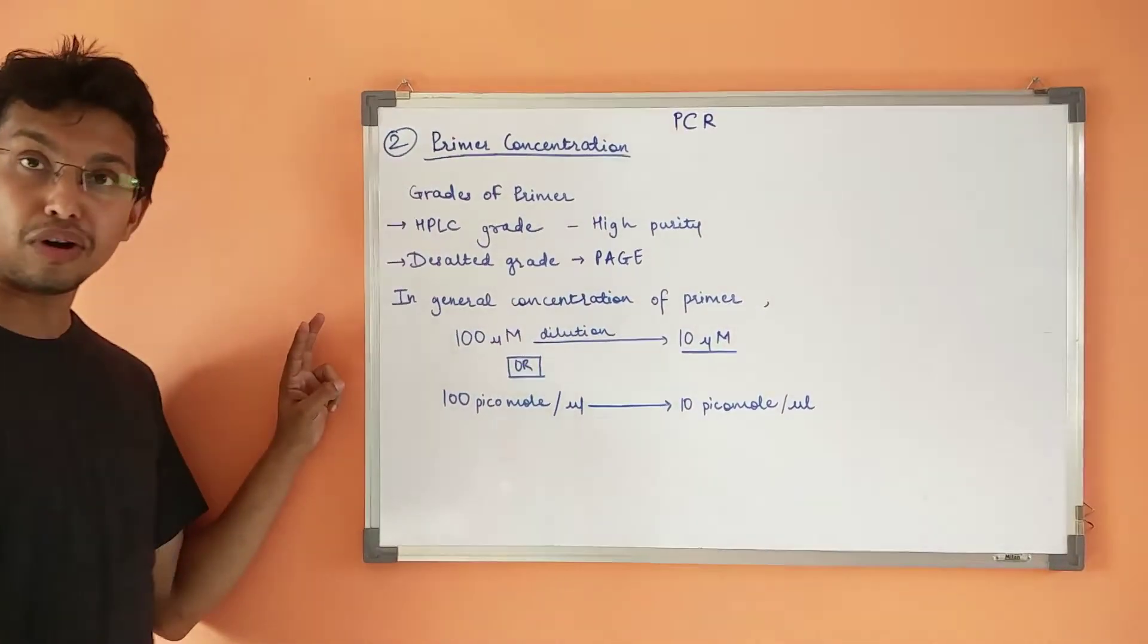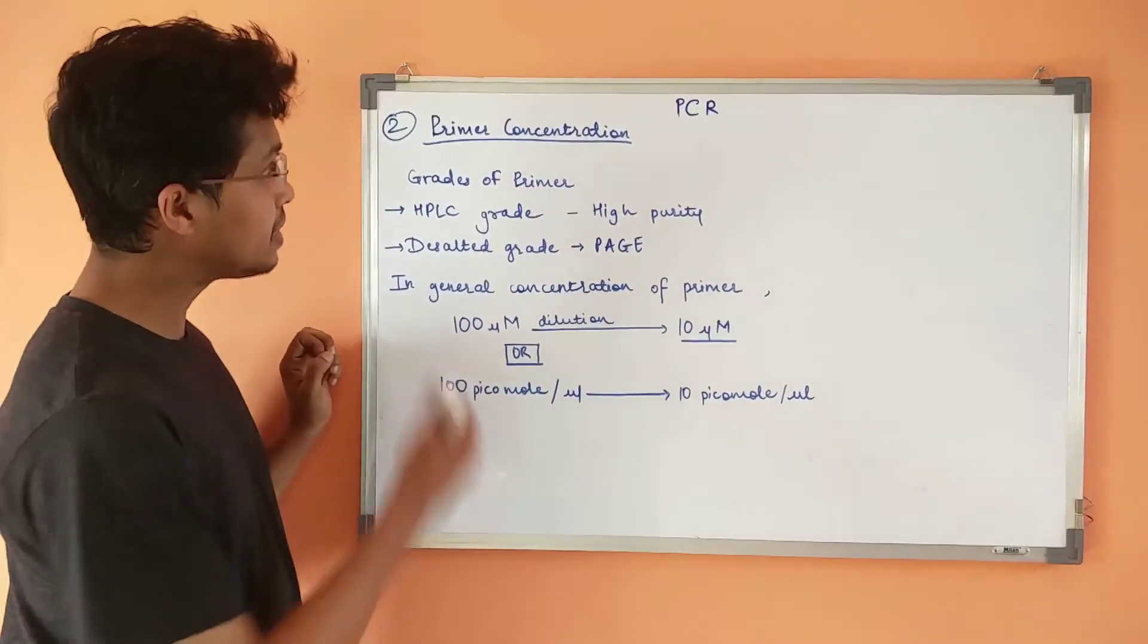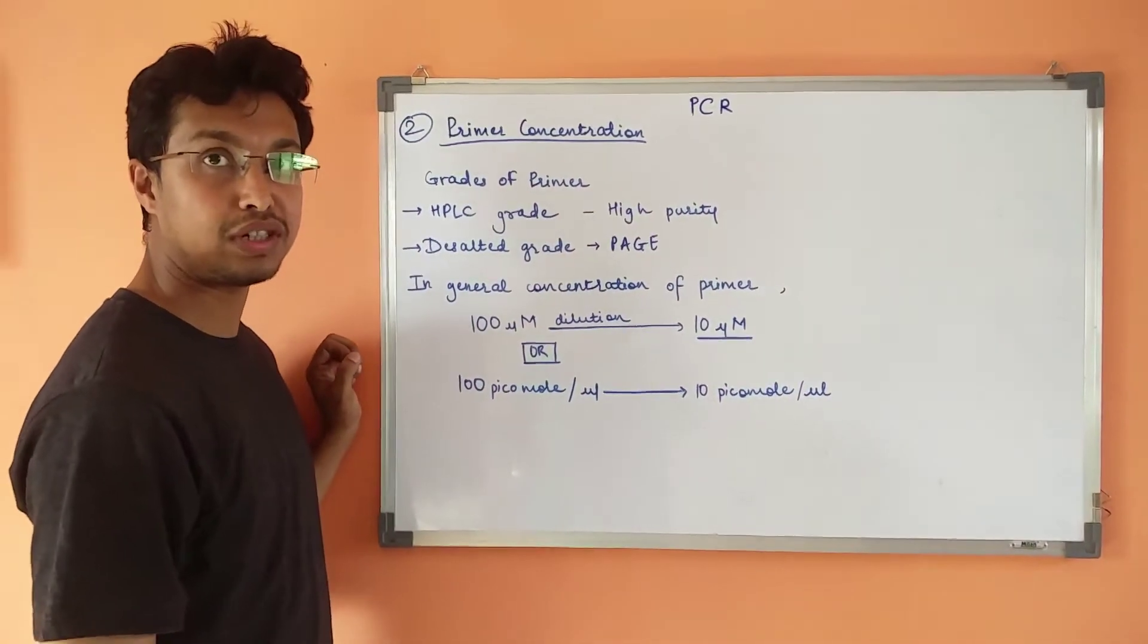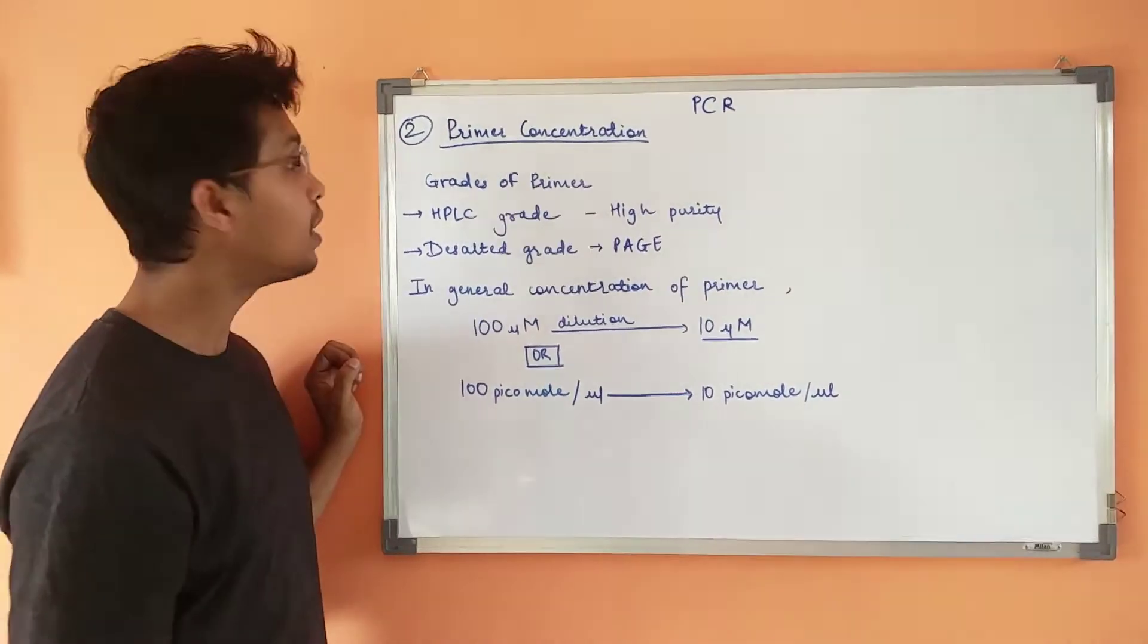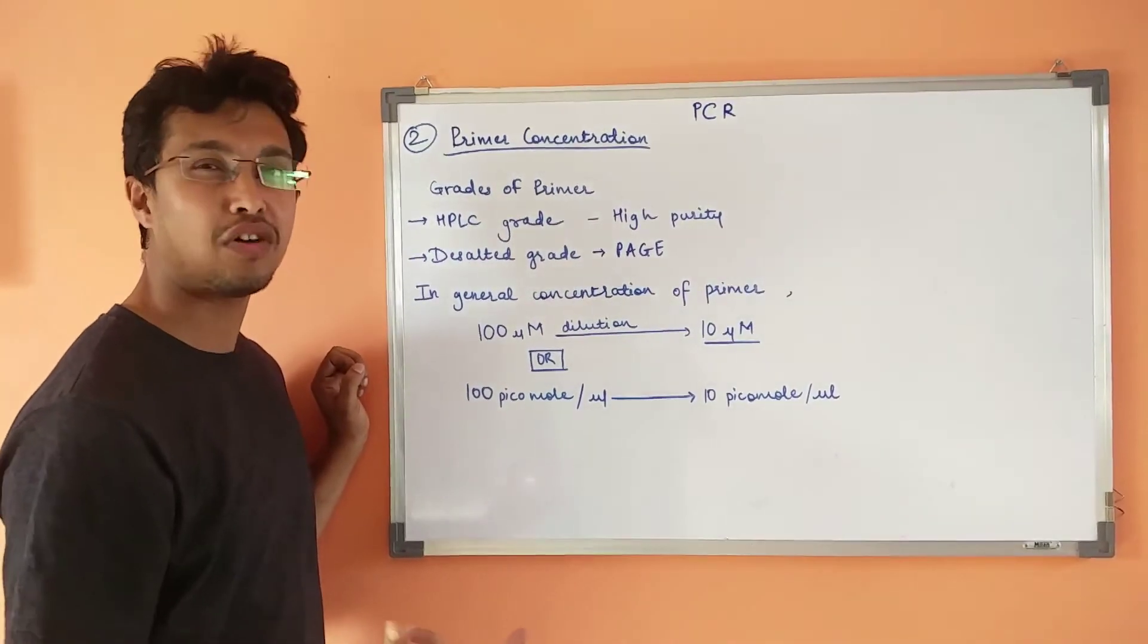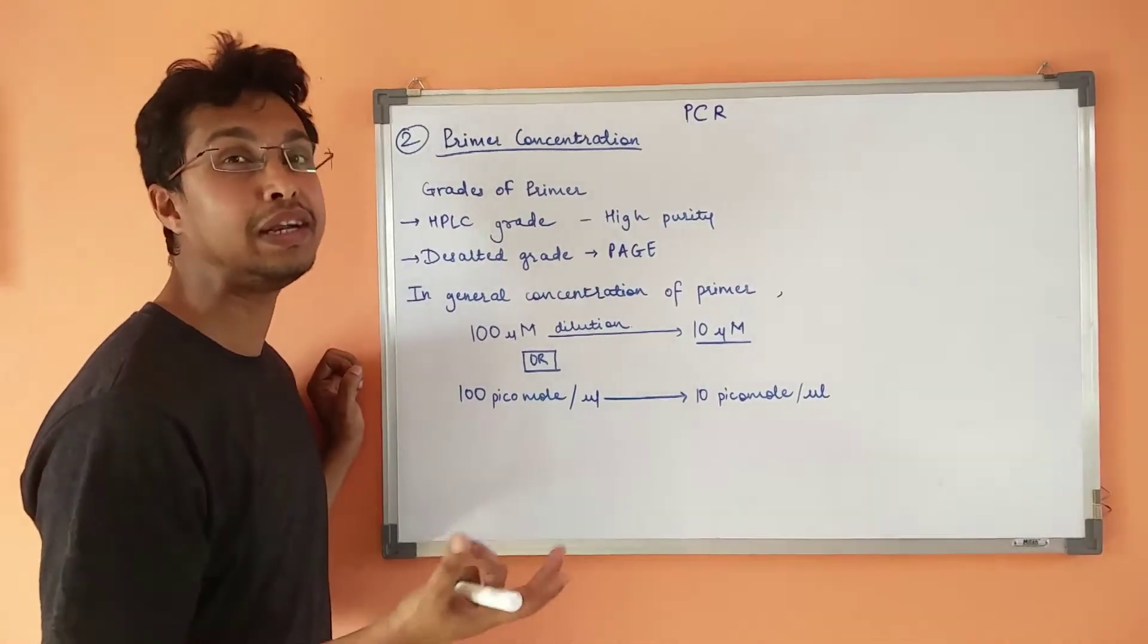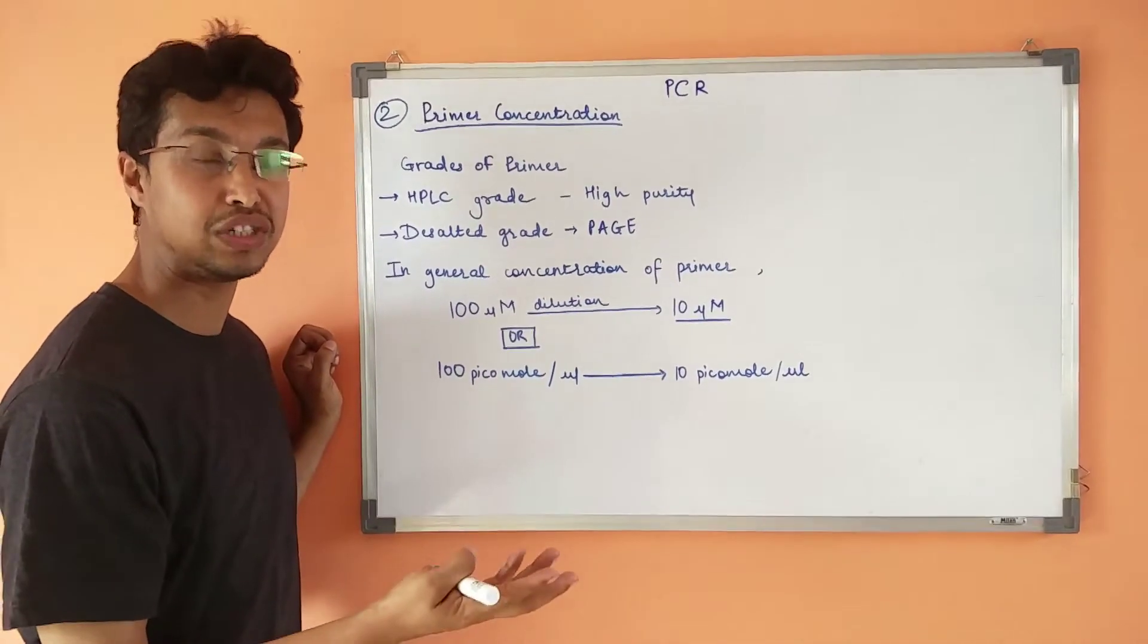The second important factor in PCR is primer concentration. Primer concentration for forward primer as well as reverse primer should be the same. What kind of grades of PCR primers we require depends purely on the kind of application which we do.